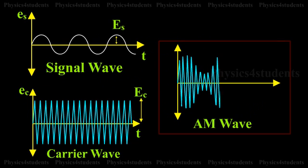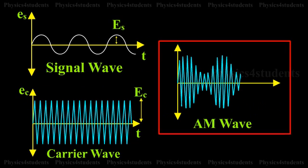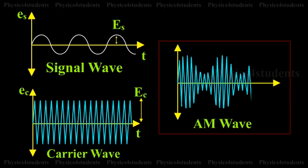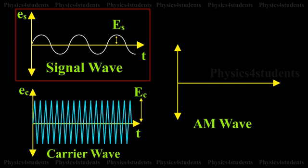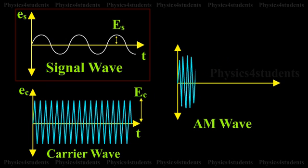In amplitude modulation, only the amplitude of the carrier wave is changed. The frequency and the phase of the carrier wave remains constant. The first visual shows the principle of amplitude modulation.